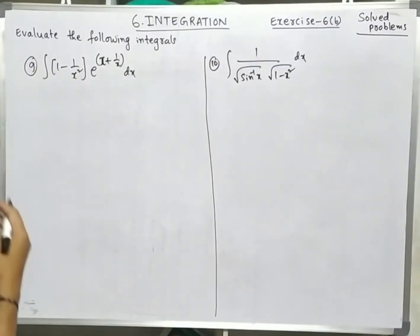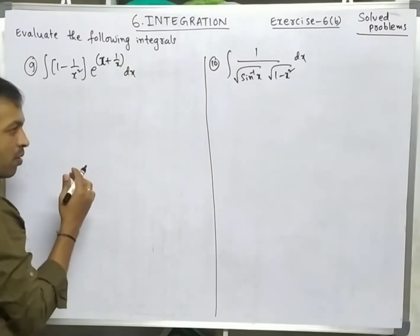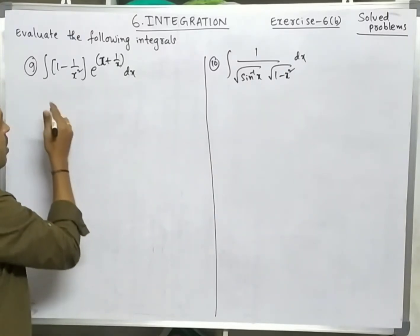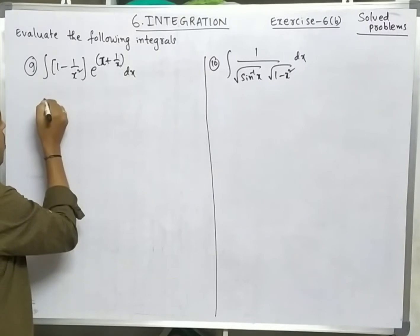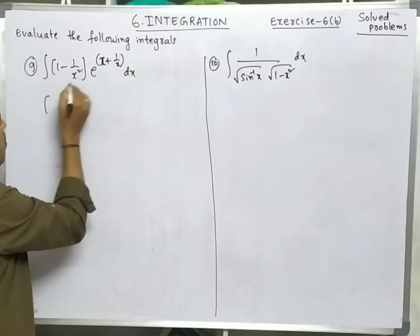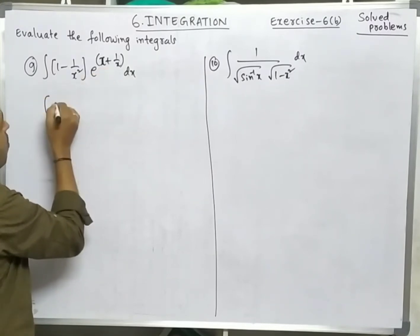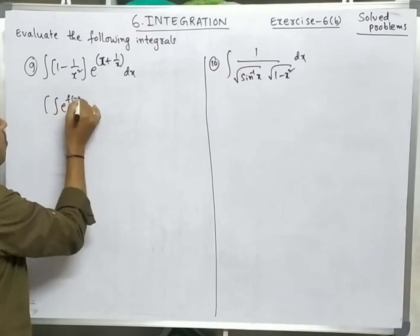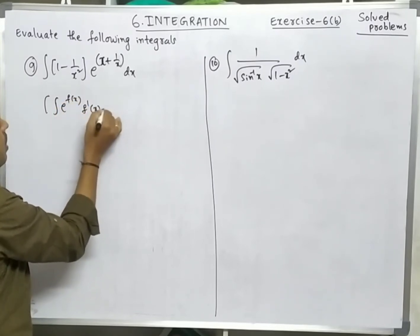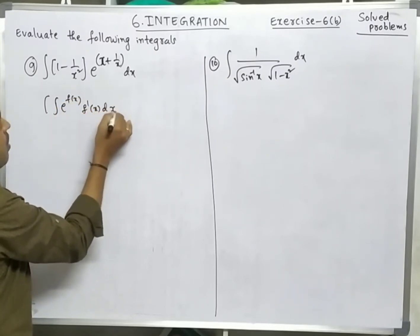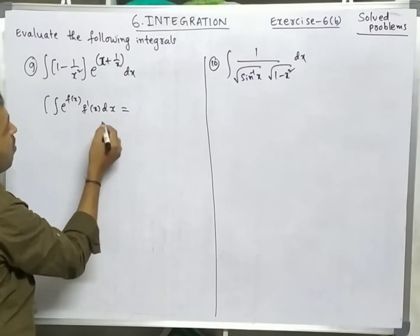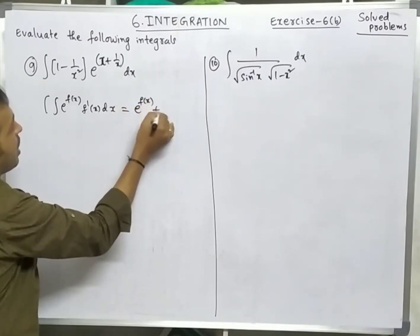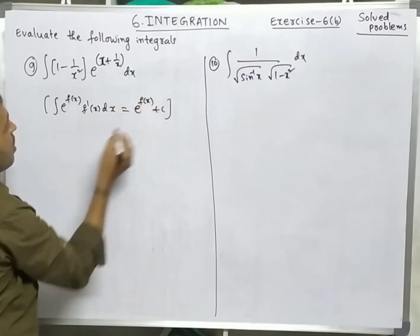Next: 9th and 10th problems. Here also we have some important shortcut formula. The formula is: integration of e^(f(x)) · f'(x) dx. I have given this formula already — the answer is e^(f(x)) + c.